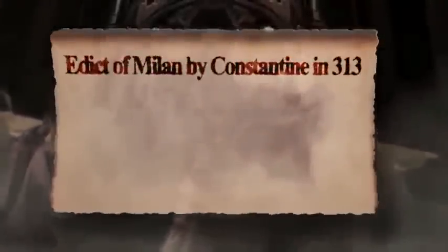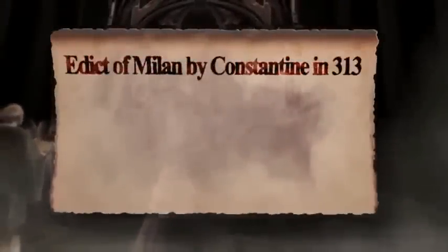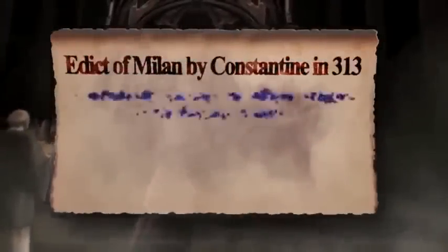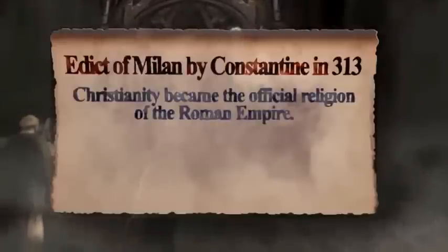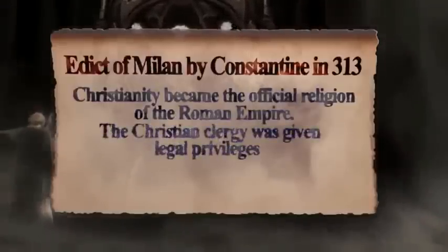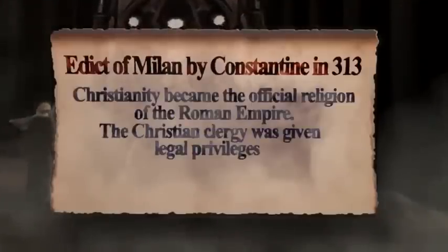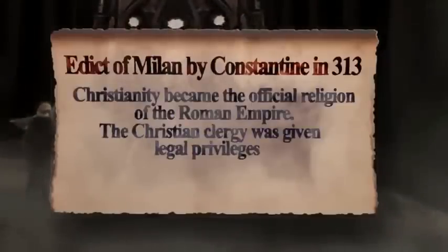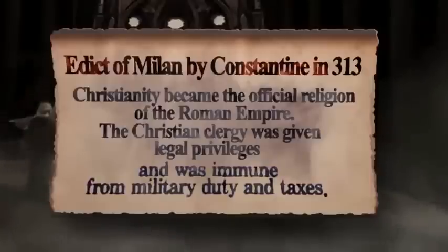In 313, Emperor Constantine proclaimed the Edict of Milan. The edict approved Christianity as a legal religion of Rome and gave legal privileges and immunity from military duty and taxes to the Christian clergy.